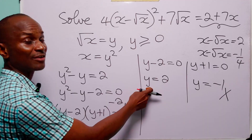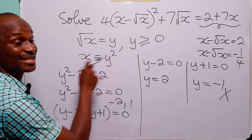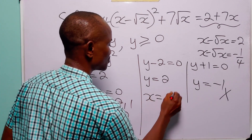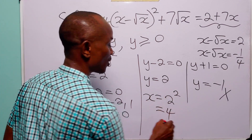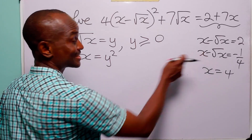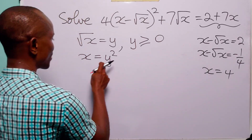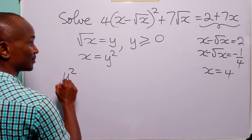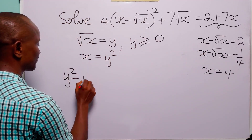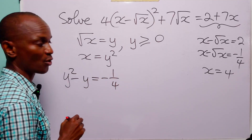And of course, from here we can find the value of x, because we have that x is equal to y squared. So, we have that x is equal to 2 squared, which is equal to 4. And in the second case, once more, we have x — which is y squared — minus the square root of x, which is y, and this is equal to minus 1 over 4.